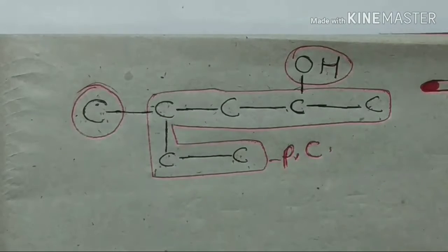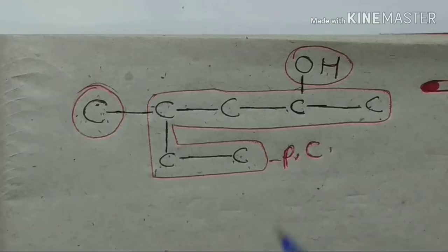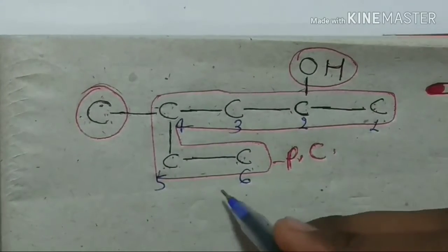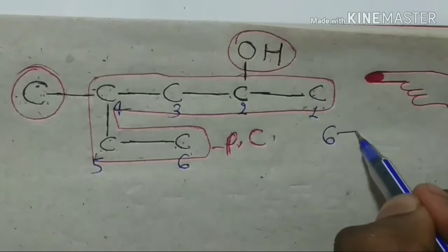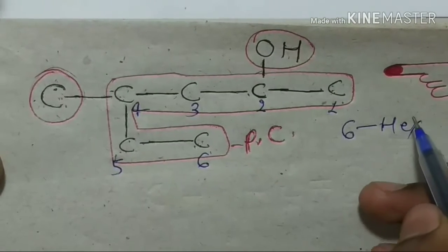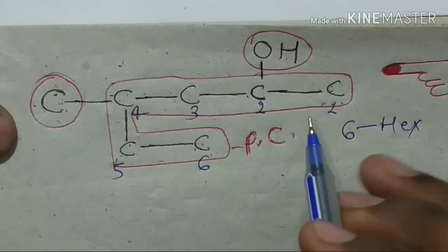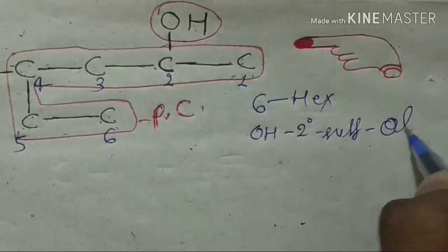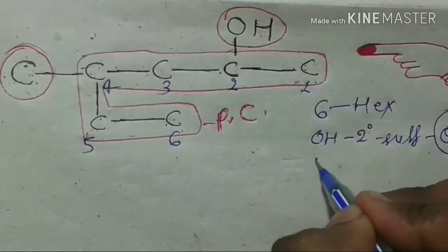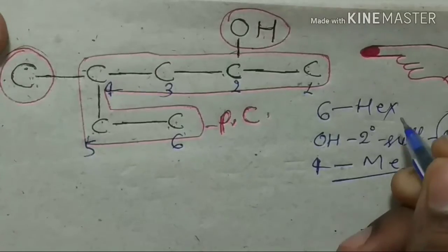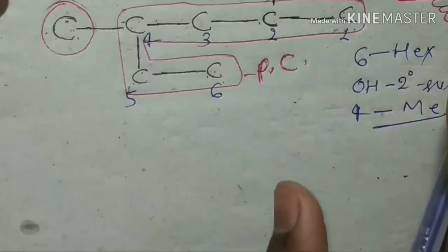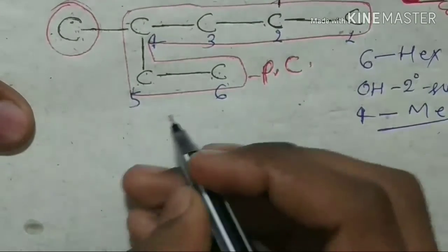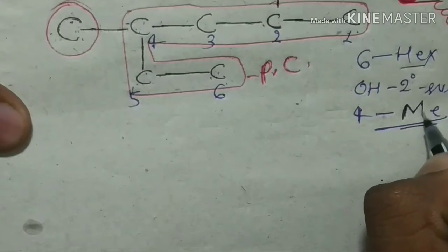We have to take the carbon chain and then start numbering. We will number: 1, 2, 3, 4, 5, 6 — a six carbon chain. The six carbon chain gives us the prefix 'hex'. Our functional group is OH, which is the secondary suffix 'ol', on the principal chain.